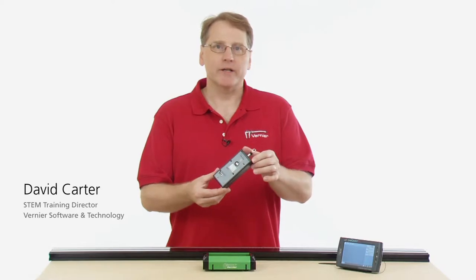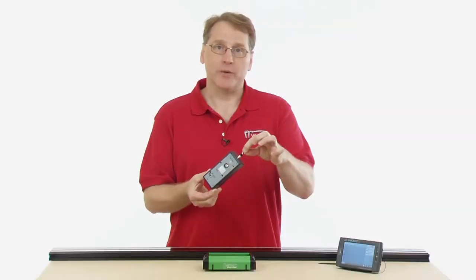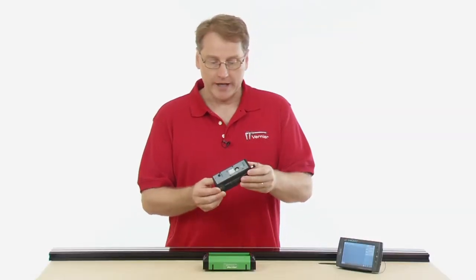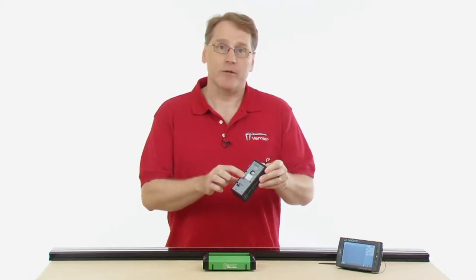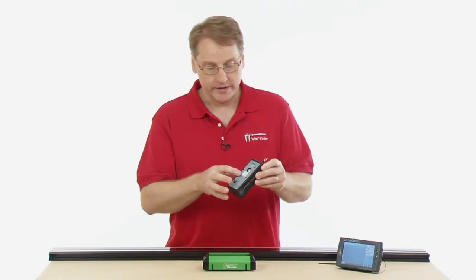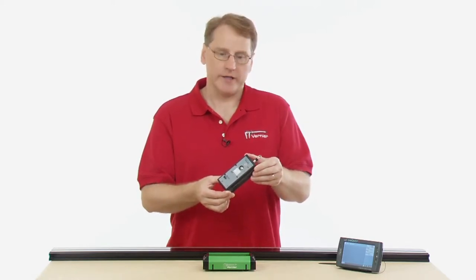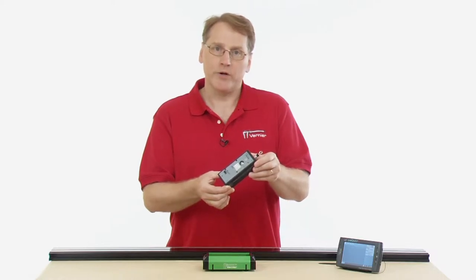This is the wireless dynamic sensor system. It is a device that has multiple sensors in it. It is a force sensor, plus or minus 50 newtons. It has a three-axis accelerometer, so we can measure acceleration in three dimensions. And it also has a built-in altimeter, plus or minus 200 meters.